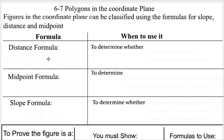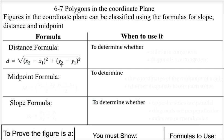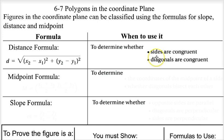We learned these earlier in the year, so we're just going to review them. See if you can write them down before the video shows them. The distance formula is the square root of (x2 minus x1) squared plus (y2 minus y1) squared. It doesn't matter which x you start with, but whatever x you start with, you need to start with the same y. We use the distance formula to find the length of something — to see if sides are congruent or if the diagonals are congruent.